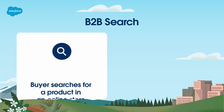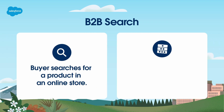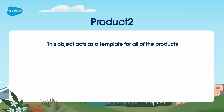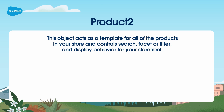B2B Search is about what happens when a buyer searches for a product in an online store. But what's behind the search exactly, and how, as an online seller, do you make your products available for search and accessible to your buyers? In B2B Commerce, all products in your B2B store are based on a data object named Product2. This object acts as a template for all of the products in your store and controls search, facet, or filter and display behavior for your storefront.